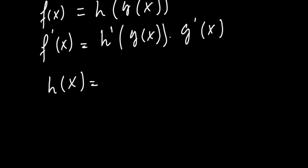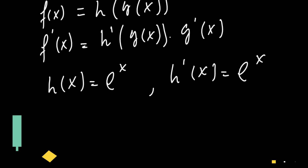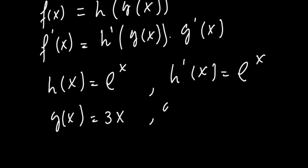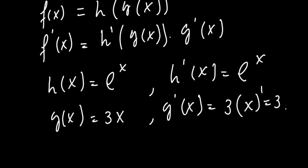H(x) = e^x, and the derivative of e^x is always e^x, so h'(x) = e^x. And g(x) = 3x, which is a linear function, and the derivative of g(x) is 3 — that is 3 times the derivative of x, and the derivative of x is 1, so it will be 3 times 1, which gives us 3.